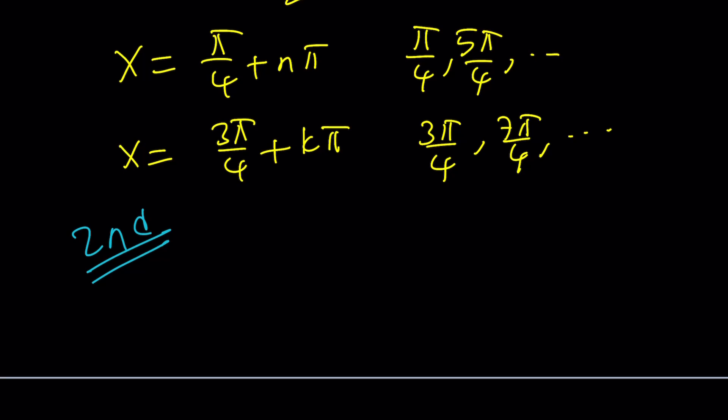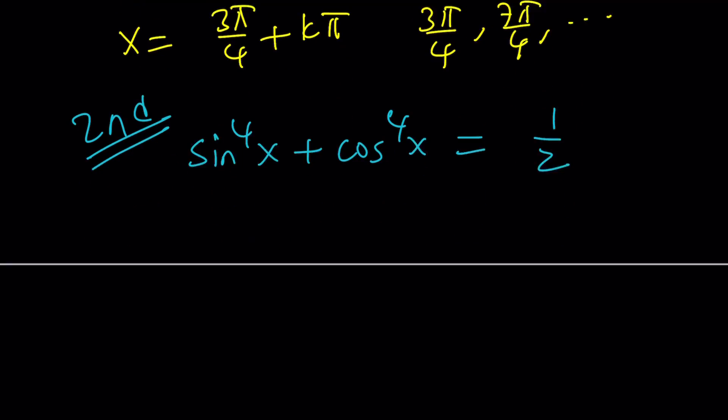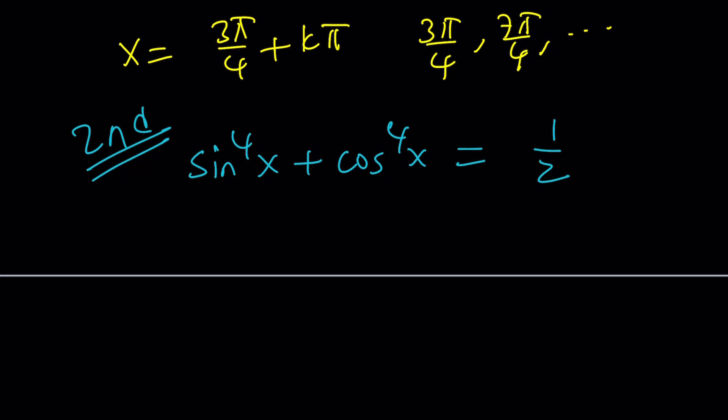And the second method uses a different idea. So we have sine x to the fourth power plus cosine x to the fourth power equals one half. Obviously, at this point, if you want to guess your answer, you could do that. For example, if x is pi over four, it's definitely going to work because sine x is going to be one over root two. Its square is going to be one half. And then if you square it again, one fourth, and one fourth plus one fourth is one half. So you can think of it that way too.